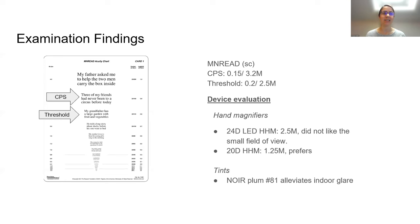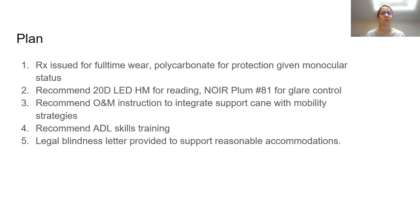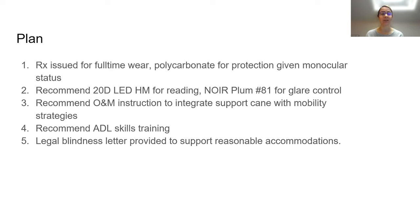With the 20 diopter illuminated handheld magnifier, she was able to read down to 1.25M, preferred it over the previous one, and felt it was something she could actively use in her daily life. We next evaluated tints, and she actually preferred a dark plum tint for her glare sensitivity. We issued a glasses prescription for full-time wear and, given that our patient is monocular, recommended impact resistant polycarbonate lens material for protection. We also recommended the 20 diopter hand magnifier, plum filters for glare control, and orientation and mobility instruction.